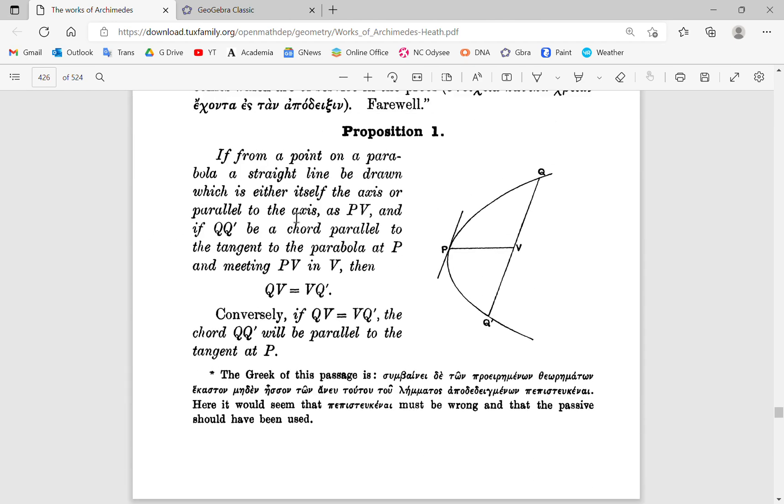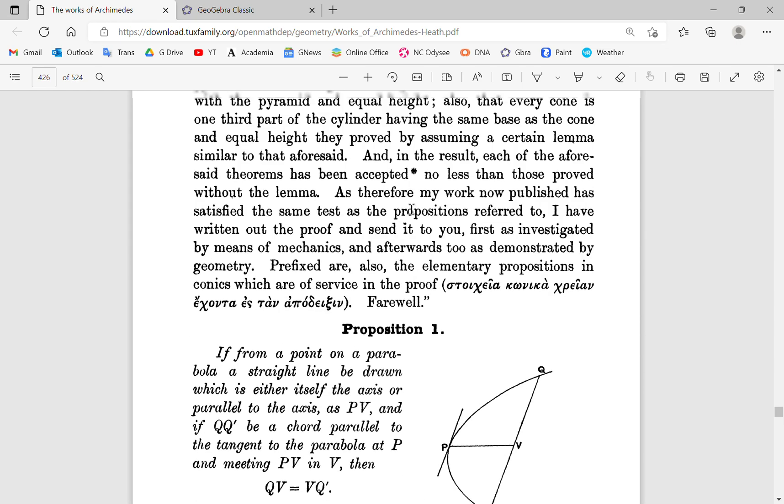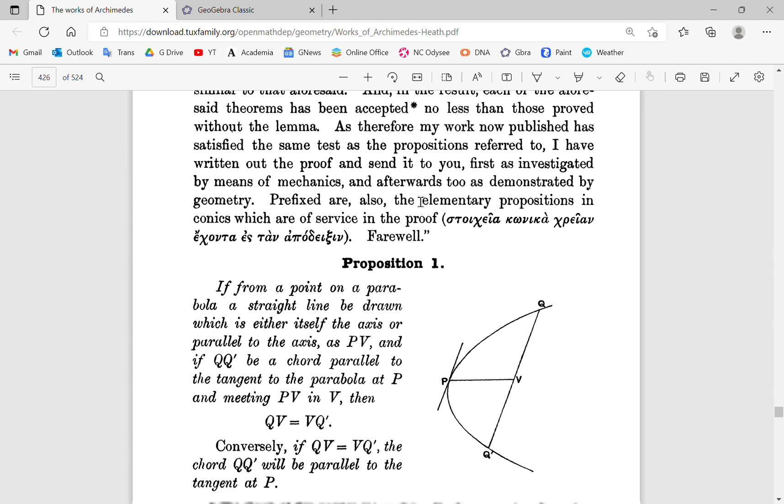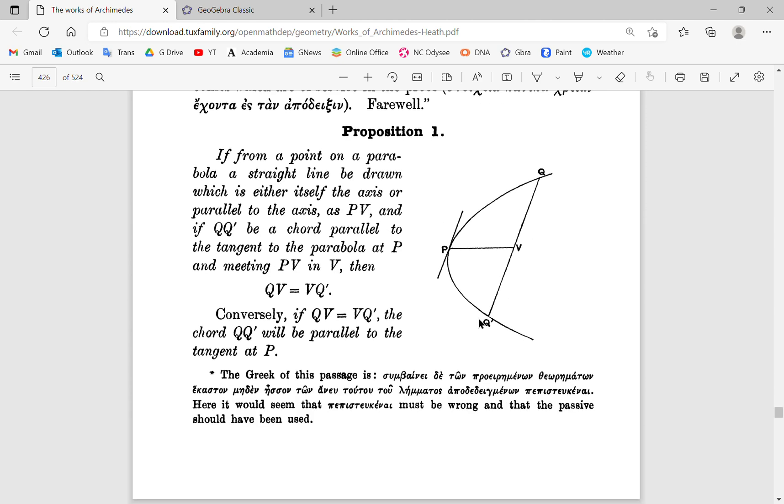He mentions three propositions in this section which he doesn't actually prove. He says that these are proved in the conics, in the elements of the conics. And of course there's no record of the elements, the conics which are described in the elements.